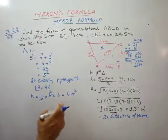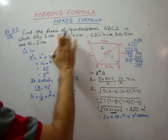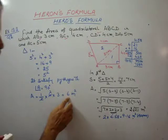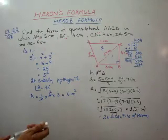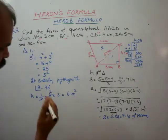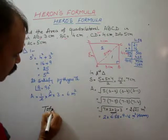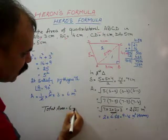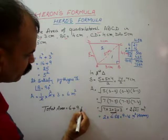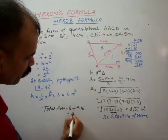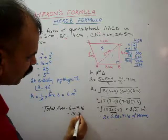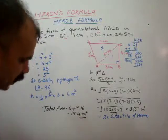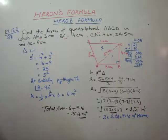Now the total area of the quadrilateral is required. Area of Triangle 1 was 6 cm², and area of Triangle 2 is approximately 9.16 cm². Adding both: total area = 6 + 9.16 = 15.16 cm².